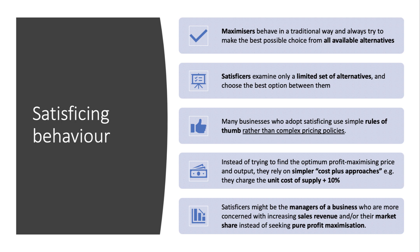Profit satisficing is important to link to the principal-agent problem and the separation of ownership and control. The satisficers — the people making those decisions — could well be the managers of a business who are often more concerned with the revenue of a firm or the growth of a business, because that affects their bonus or their career prospects, rather than pure profit maximisation. In short, owners wish to maximise profits, but workers and many managers may not, unless they have a direct incentive to do so.